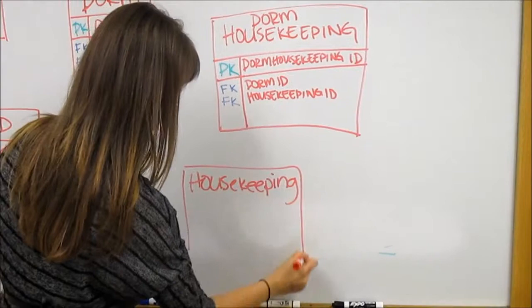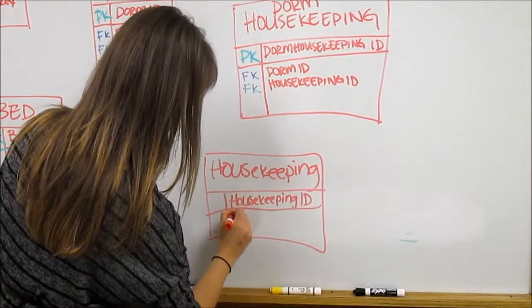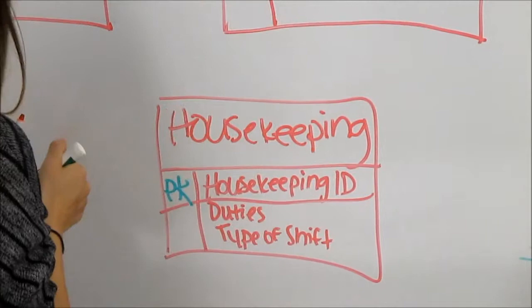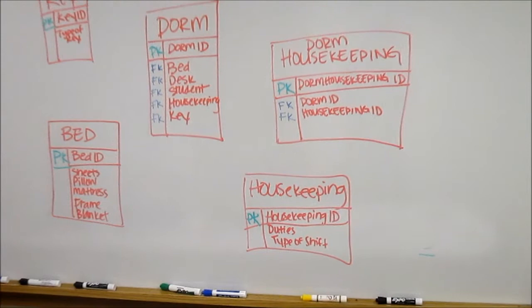We now move to our final entity of housekeeping. We identify the primary key of housekeeping ID and list the attributes below, including duties and type of shift. Once again, we illustrate the primary key with a PK next to the primary key. Notice that the foreign keys in the parent table match the titles of the child tables.